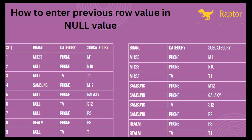In this video, we'll try to learn a SQL interview question. We have a table on the left-hand side with brand, phone, brand category, and subcategory columns. We can see that in the first row we have a brand name, then rows with null values, then 'Samson', then null, then 'Realme', then null. What we want to do is: wherever a brand name exists, copy it down to all the following null rows until the next non-null brand appears.